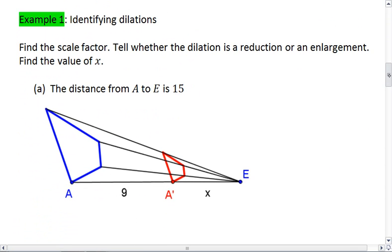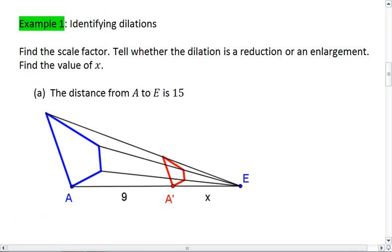Let's look at an example. In the figures below you're going to identify the dilation. First of all you're going to find the scale factor. You're then going to tell whether the dilation is a reduction or an enlargement and find the value of X. So you're doing three things here: finding scale factor, telling whether it's an enlargement or reduction, and finding the value of X.